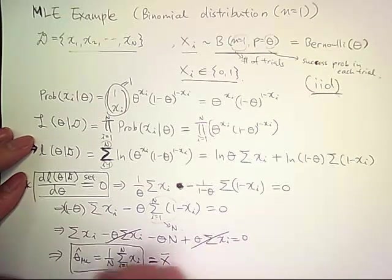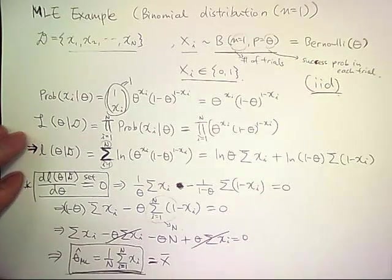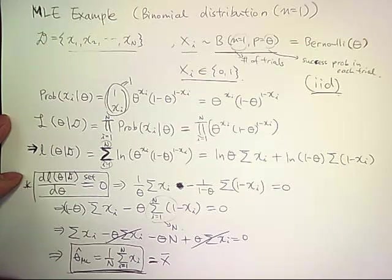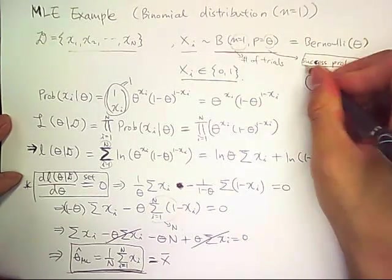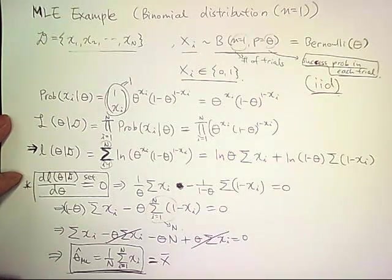So this is a very intuitive maximum likelihood estimate of theta. This is a success probability in each trial of this Bernoulli distribution.